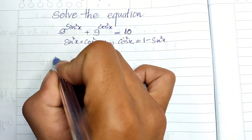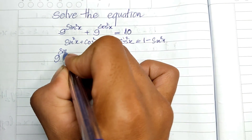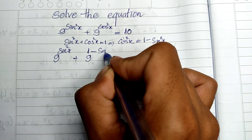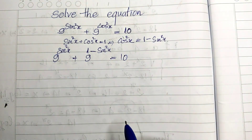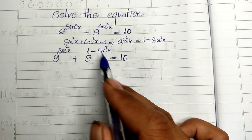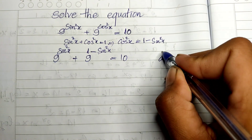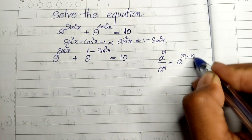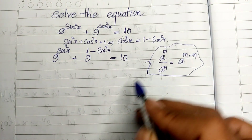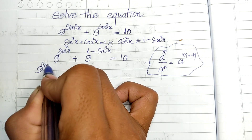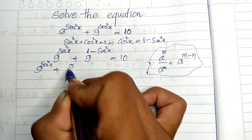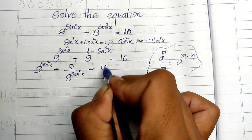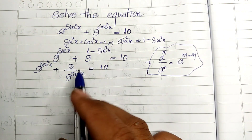So I replace cosine squared θ by 1 minus sine squared θ, and we get 9 to the power of sine squared θ plus 9 to the power of (1 minus sine squared θ) equals 10. Then we can use the rule that a^m divided by a^n equals a^(m-n), so we get 9 to the power of sine squared θ plus 9 divided by 9 to the power of sine squared θ equals 10.